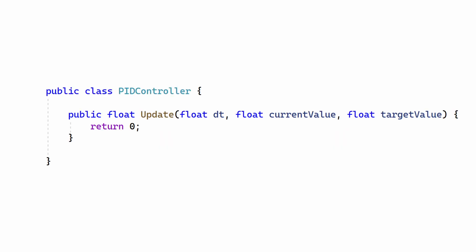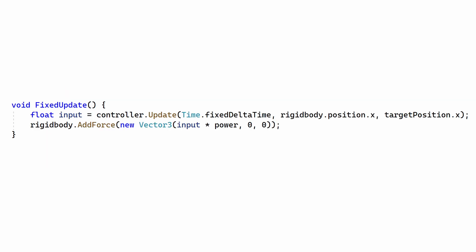We'll create a class and the main interface for the controller. DT is the time step of the simulation. Current value is the measurement of the system's current state — this is the feedback part of the controller. Target value is the target value. The return value is the output of the PID controller, which we use to move the system. Since we're using Unity for physics, the DT is the fixed time step. The box has a rigid body, so the current value is the horizontal position, and the target value is whichever target position the user selects.